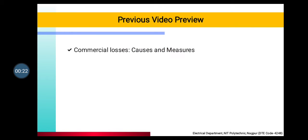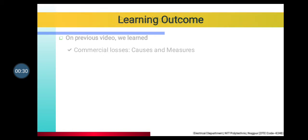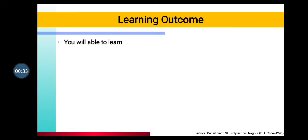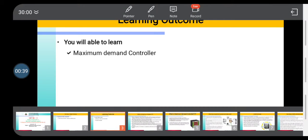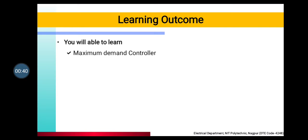In the previous video, you observed or studied about commercial losses, their causes and measures. And in the learning outcomes, after watching this video, you will be able to learn about the Maximum Demand Controller and KVAR (Kilovolt Ampere Reactive) Controller.